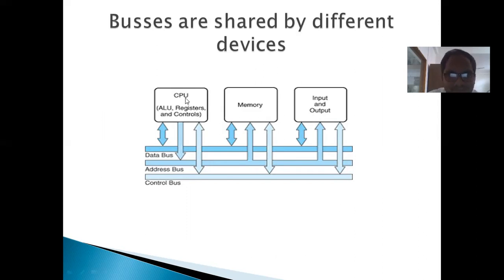We can see that these are the three buses: data bus, address bus, and control bus. This is the data transfer between input devices, memory, and the CPU via bus. The data bus contains data, the address bus contains addresses, and the control bus contains control signals.